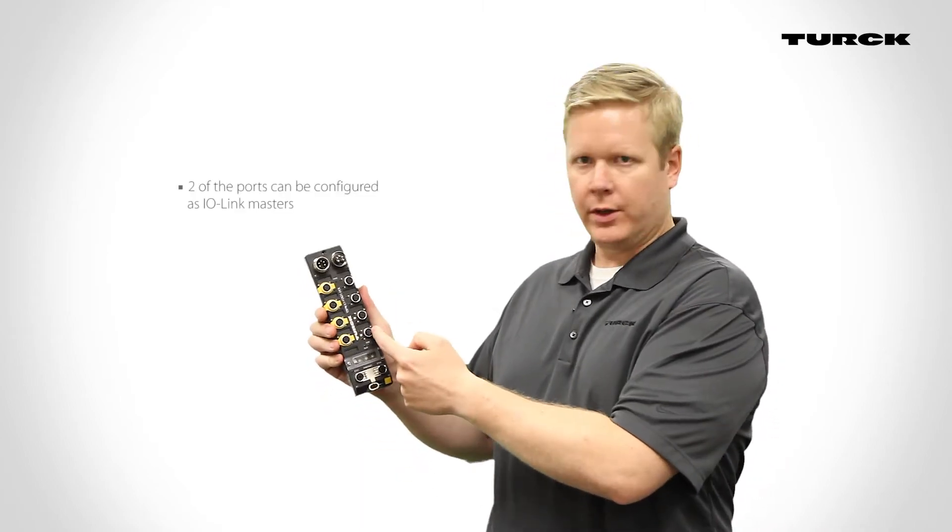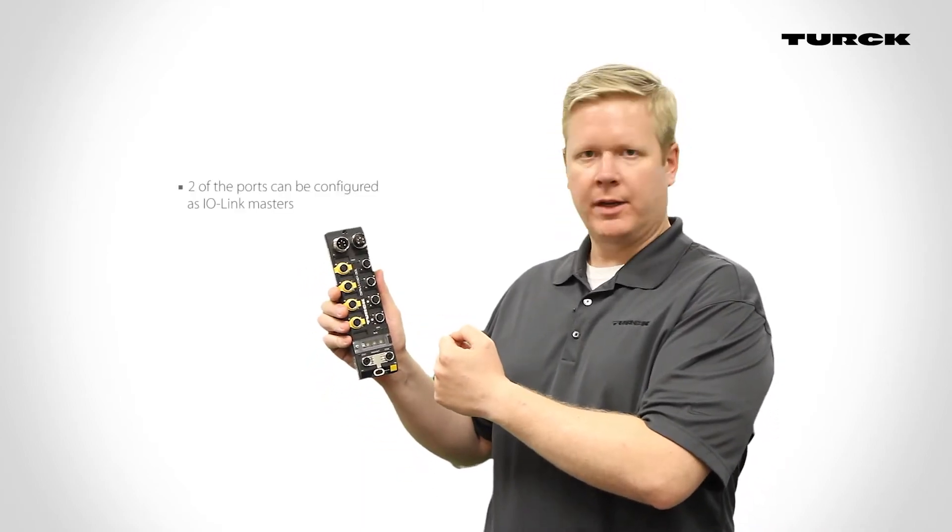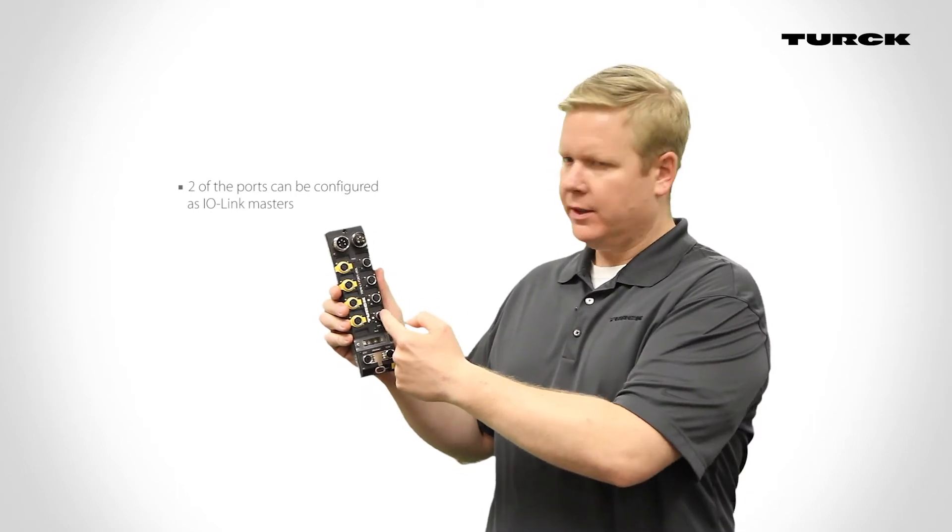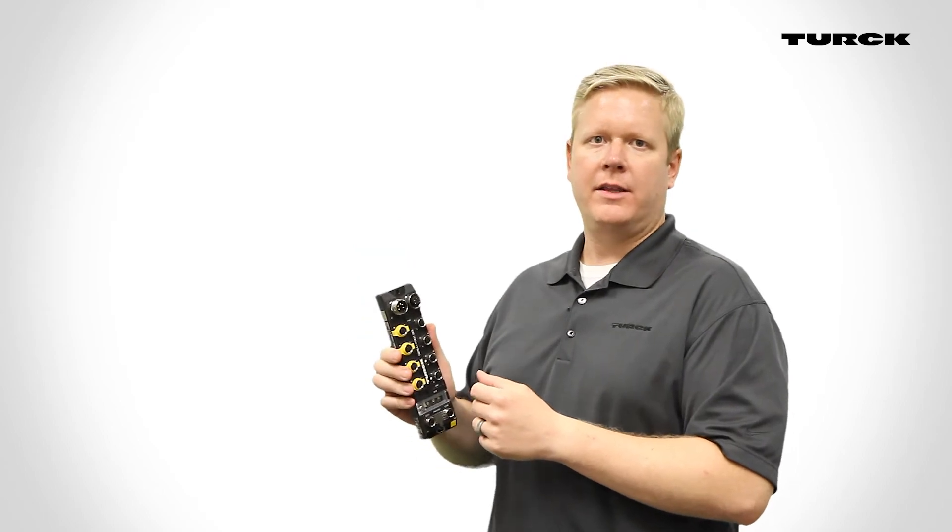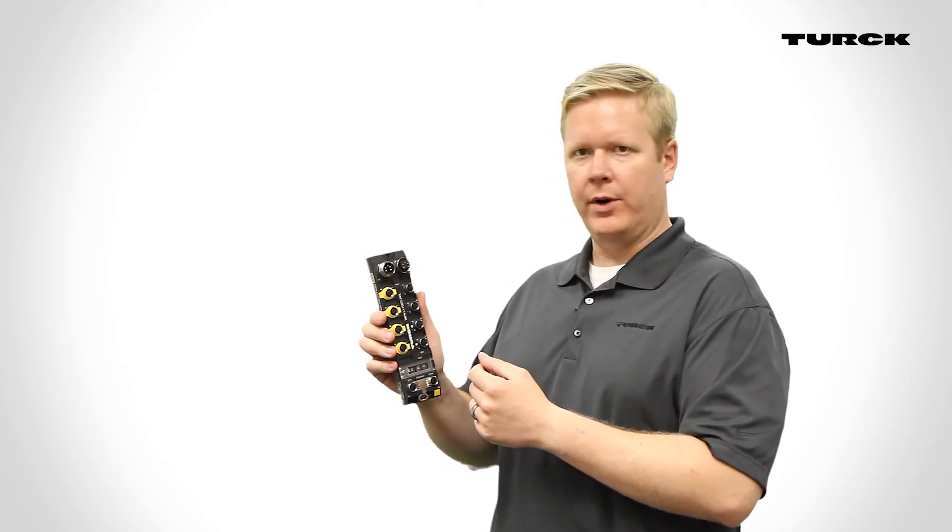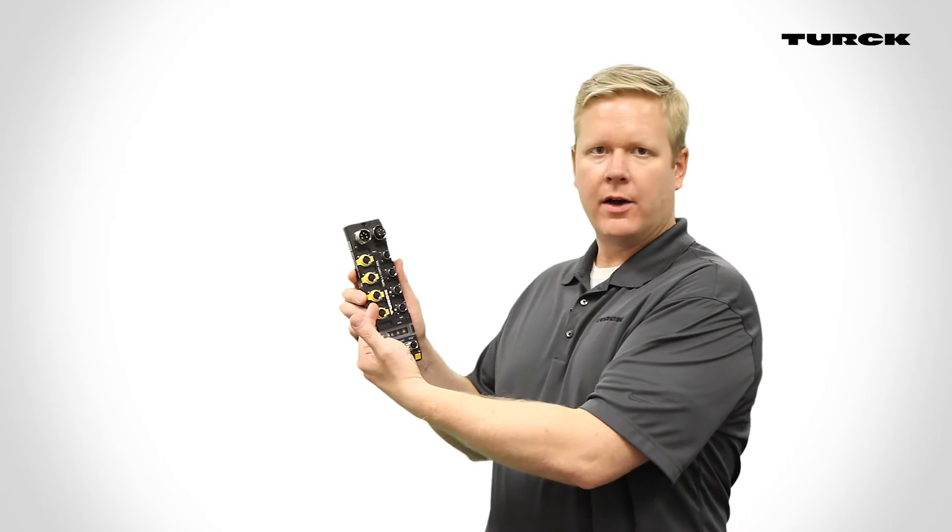If these four general purpose I.O. ports are not enough for a particular application, two of the ports can be configured as I.O. link masters. Configuring these ports as I.O. link masters, used with Turck's TB-IL I.O. link hub, which allows for up to 16 digital inputs or outputs, gives a single PROFISAFE block the ability to have up to 36 general I.O. points in addition to the safety I.O.